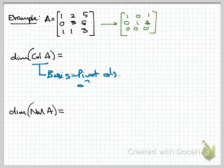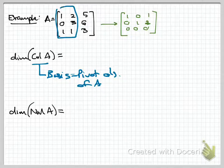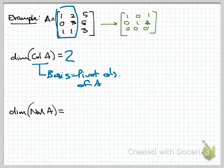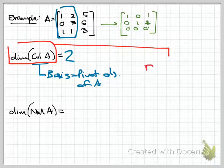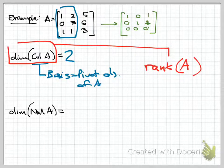The basis for the column space consists of the pivot columns of A—highlighted in blue. There are two pivot columns, so the dimension of the column space is 2. The dimension of the column space goes by a special name: the rank of A. The rank of a matrix is simply the dimension of its column space. So the rank of this matrix A is 2.